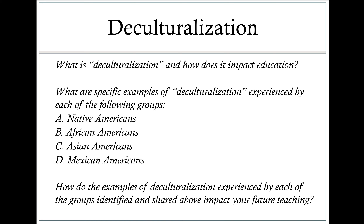This is section two of chapter two. As you look at this section, think about the specific examples of deculturalization that have been experienced by the four groups discussed: Native Americans, African Americans, Asian Americans, and Mexican Americans. I encourage you to please make sure to watch the videos and links included for each of these groups, as well as explore the articles included, because they'll give you great insight and information about deculturalization and what it really means for the students you'll be working with. Even though this is in the past, think about the implications these students go through still today and how deculturalization impacts them. Try to come up with examples of deculturalization you've seen or maybe experienced, and how you might address that as a future educator.